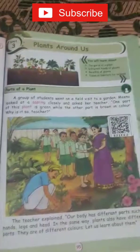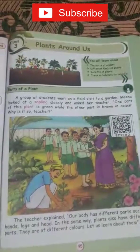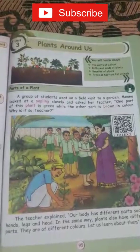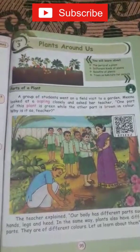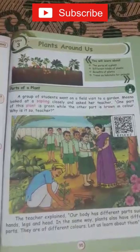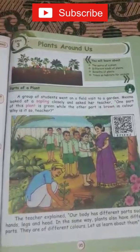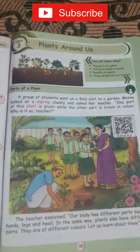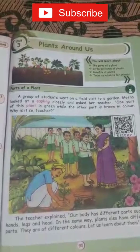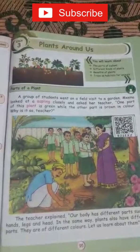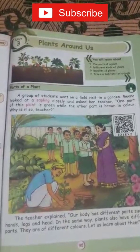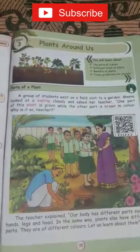A group of students went on a field visit to a garden. Mina looked at a sapling closely and asked her teacher: one part of a plant is green while the other part is brown in color. Why is it so, teacher?